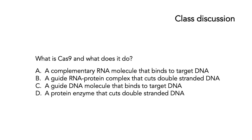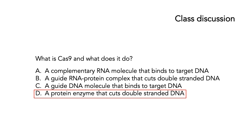Here's the first class discussion. What is Cas9 and what does it do? The options are: A, a complementary RNA molecule that binds to target DNA; B, a guide RNA protein complex that cuts double-stranded DNA; C, a guide DNA molecule that binds to target DNA; or D, a protein enzyme that cuts double-stranded DNA. The answer is D — Cas9 is a protein enzyme that cuts double-stranded DNA.